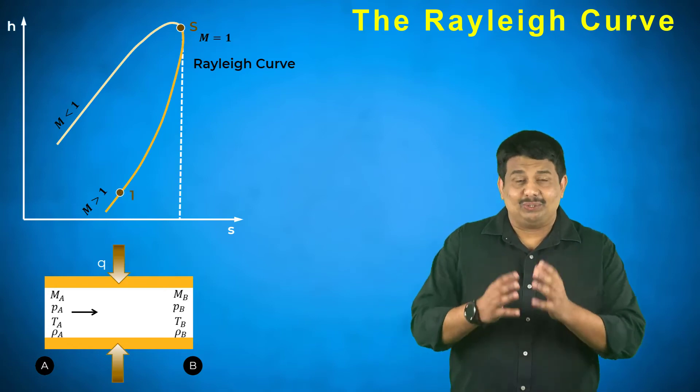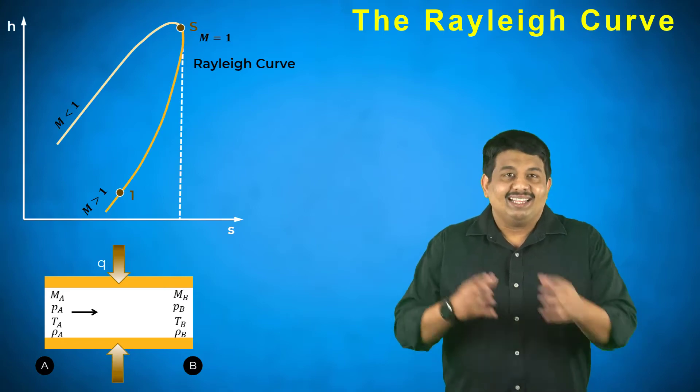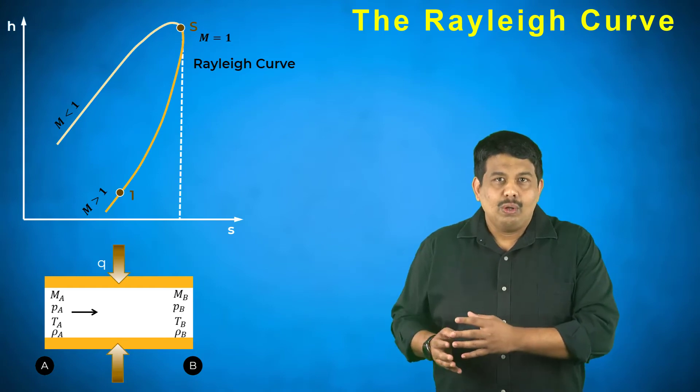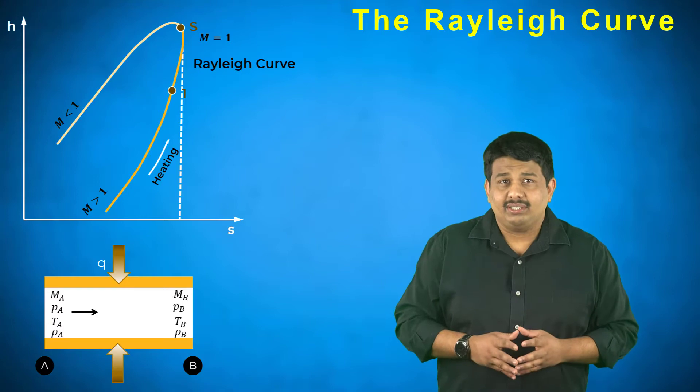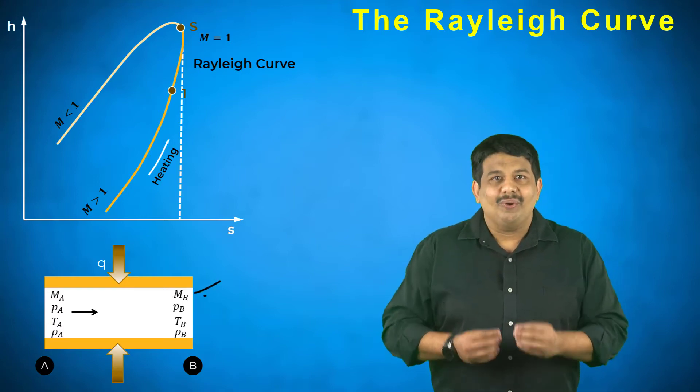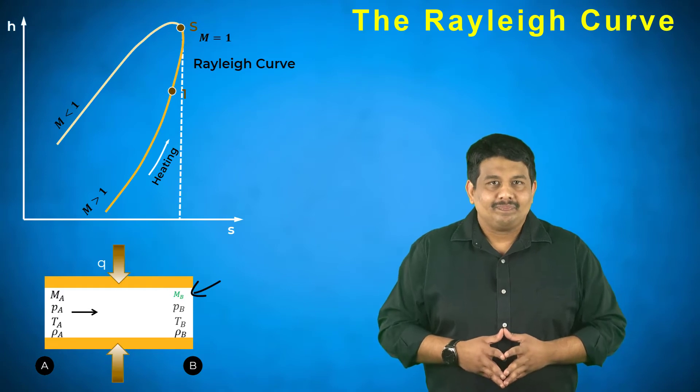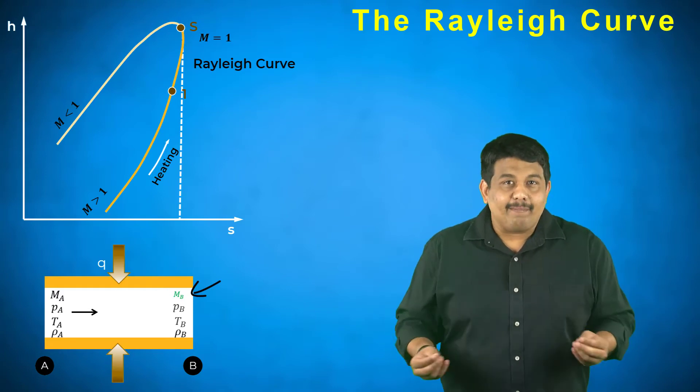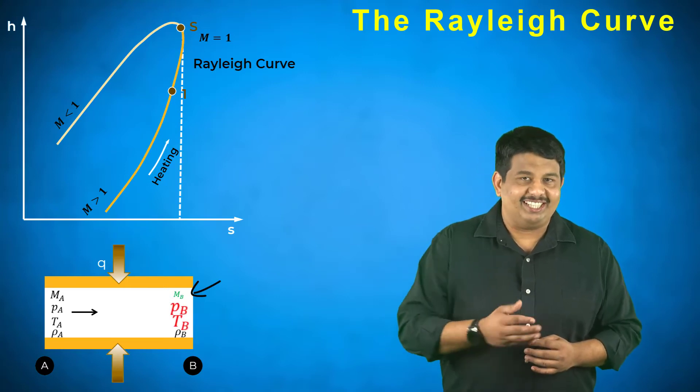When heat is added to a supersonic flow, which is represented by point 1, the conditions in region B of the flow move closer to the point S. In other words, the supersonic flow decelerates when the heat is added to the flow. The pressure and temperature of supersonic flow undergoing heat addition increases in region B.